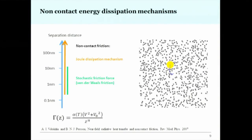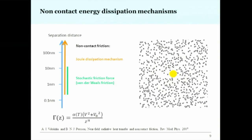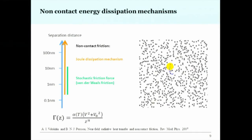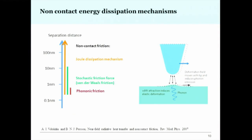Stochastic friction also has a voltage-squared dependence, and its distance dependence again varies with surface type. The third mechanism — phononic friction — occurs at very close distances and requires a bit more energy, but it is possible to excite phonons inside the crystal and lose energy to them. This mechanism is relatively easy to identify because it occurs at very close distances and has a voltage-to-the-power-4 dependence on applied bias, making it easier to distinguish from Joule and van der Waals friction.